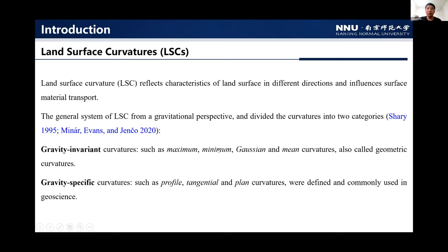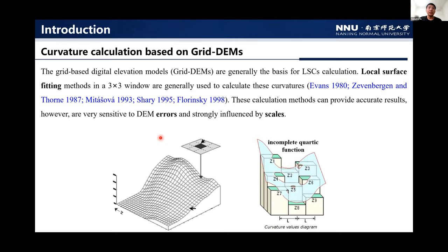Grid-based digital elevation models are generally the best for land surface curvature calculation. Local surface fitting methods in a 3x3 window are generally used to calculate curvatures. These calculation methods can provide accurate results; however, they are very sensitive to DEM errors and strongly influenced by scale.